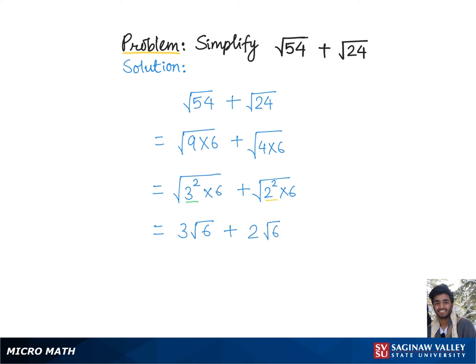As simply 2 and we have root 6. Now since we have like radicals we can combine, meaning add or subtract them algebraically. So here we have 3 root 6 plus 2 root 6 is 5 root 6, which is the final answer.